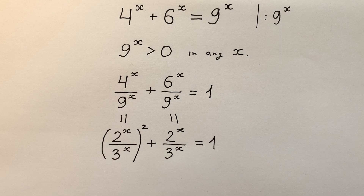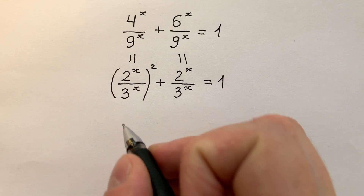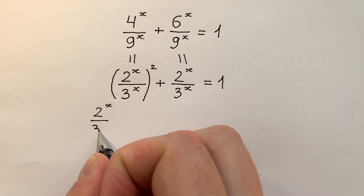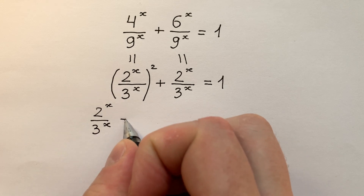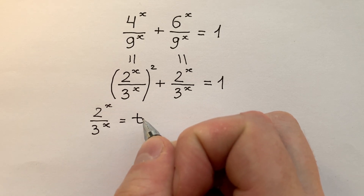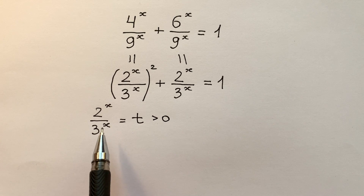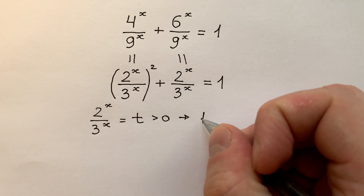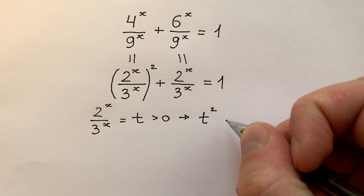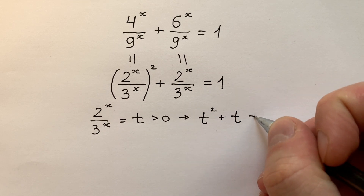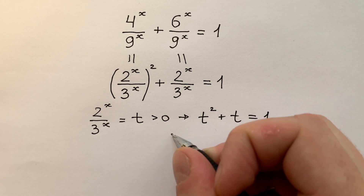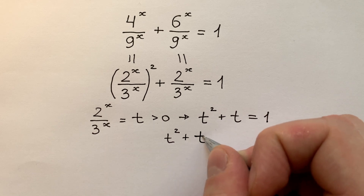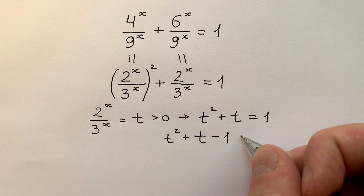What can we see now? If we put 2 to the power of x divided by 3 to the power of x as t, which is bigger than 0, we can get a quadratic equation like t squared plus t equals 1, or t squared plus t minus 1 equals 0.